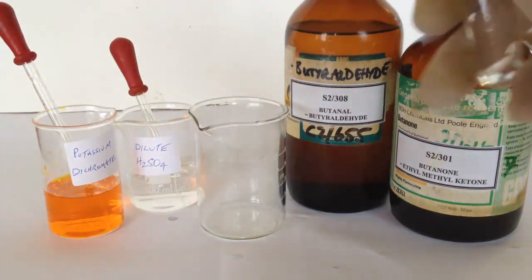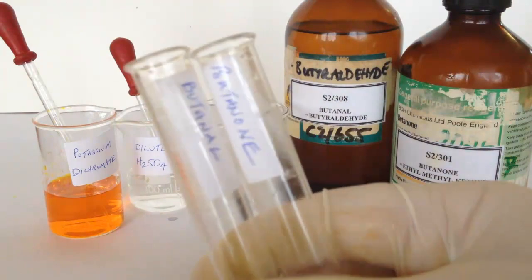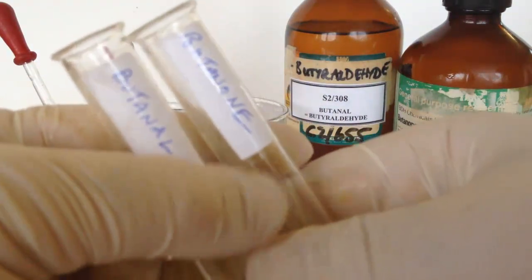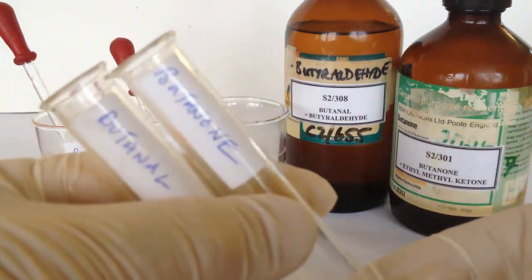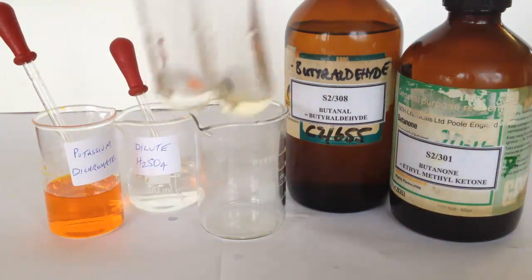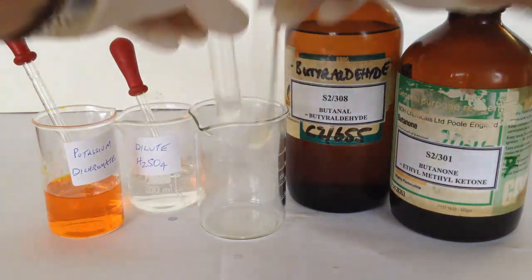You'll see here I have about a cubic centimetre of each of these carbonyls in the test tubes. The lower one is butanal, the upper one butanone.